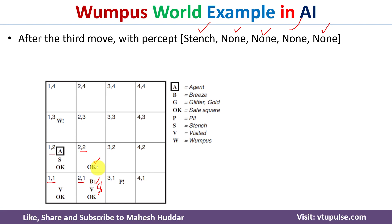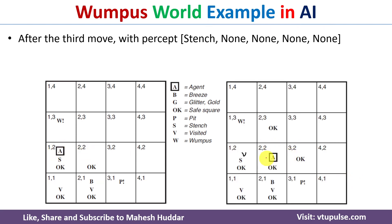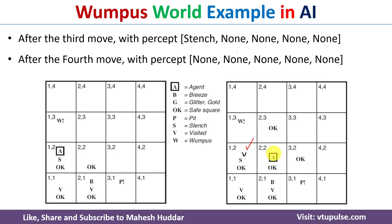Since (2,2) is a safe state, the agent will go from (1,2) to (2,2), and (1,2) is marked as visited. When the agent is present in (2,2), it will not sense anything — no stench, no breeze, no glitter, no bump, no scream. This means all adjacent squares — (1,2), (2,3), (3,2), and (2,1) — are safe. Out of these, (1,2) and (2,1) are already visited, so there are two unvisited squares to choose from.